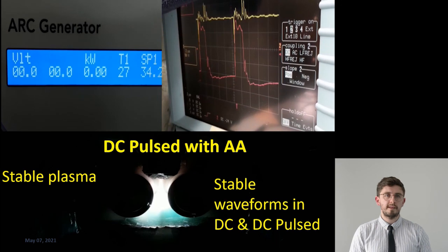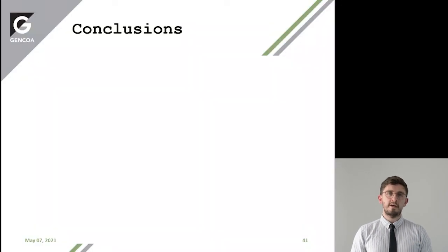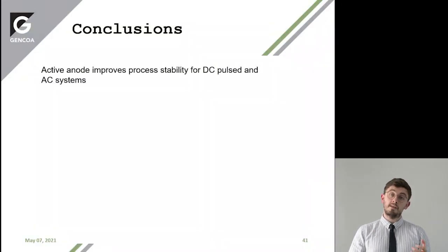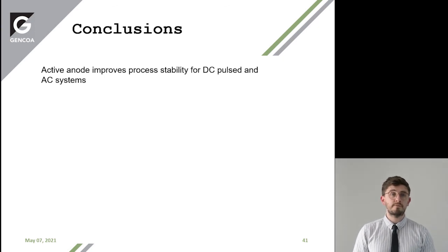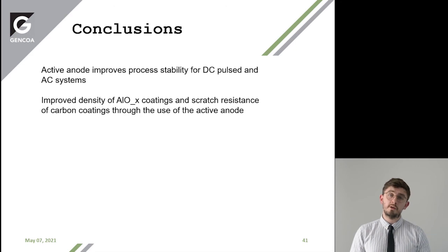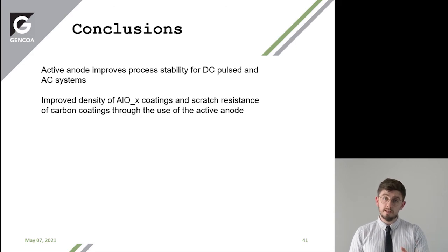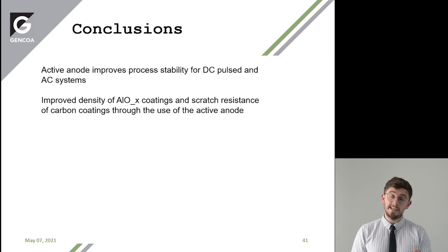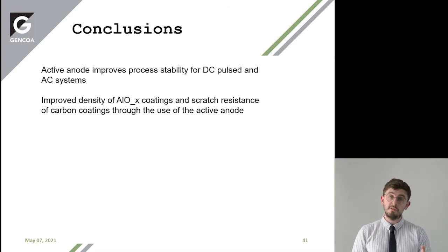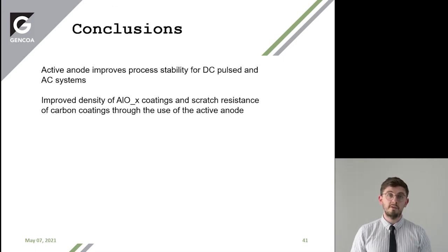In conclusion: we've demonstrated that the active anode improves processability in the DC pulsed reactive process and for AC systems. We've demonstrated improved density of aluminium oxide coatings going from DC pulsed with no anode to with an anode, and in AC with no anode and with the anode. We also showed improved scratch resistance when producing DLC coatings on glass when the active anode was in the system.